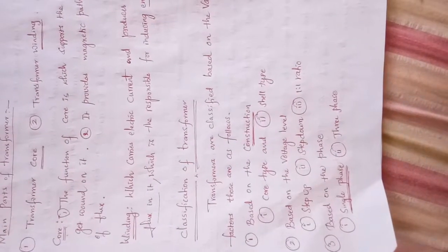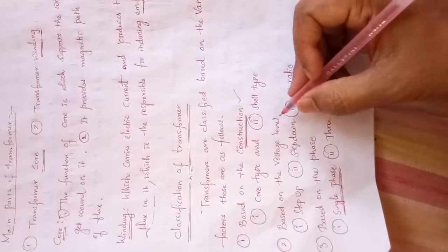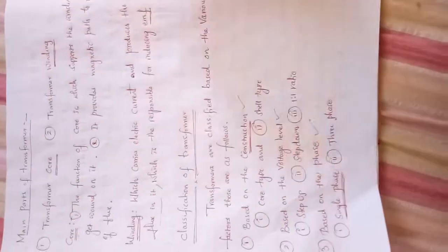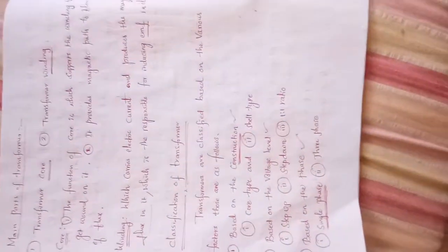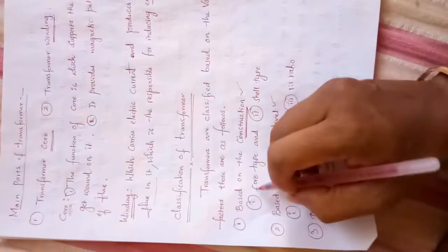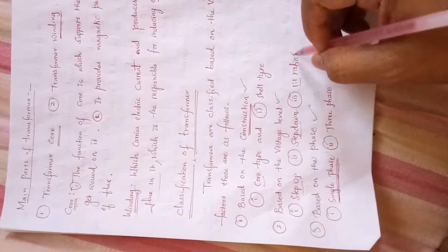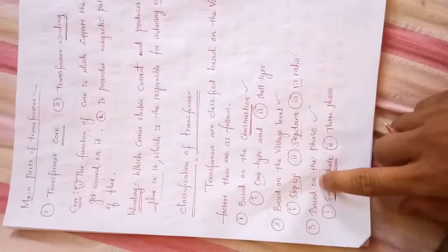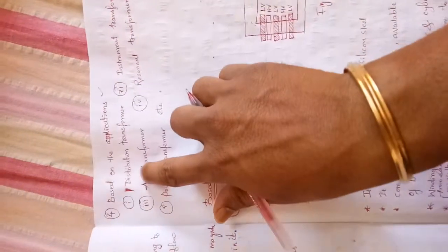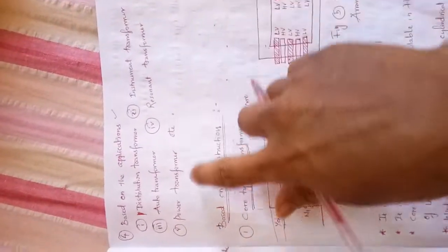Transformers can be classified based on various factors. Based on construction: core type and shell type. Based on voltage level: step-up transformer, step-down transformer, and 1:1 ratio (isolation) transformer. Based on phase: single-phase and three-phase transformer. Based on application: distribution transformer, instrument transformer, auto transformer, resonant transformer, and power transformer.